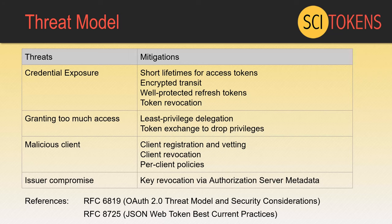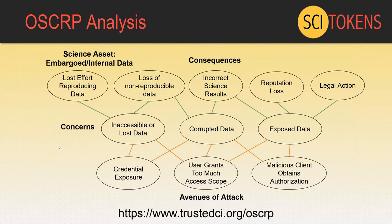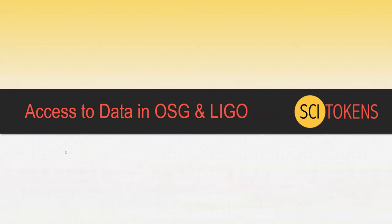Another way to think about our threat model is using Trusted CI's OSCRP. Credential exposure, tokens with too many privileges, and malicious clients can impact loss of effort for reproducing data, incorrect science results, and reputation loss. This illustrates why cybersecurity risks impact scientific productivity and are important to address in our infrastructures. That is my quick introduction to the current state of SciTokens — now I'll hand the screen over to Derek.